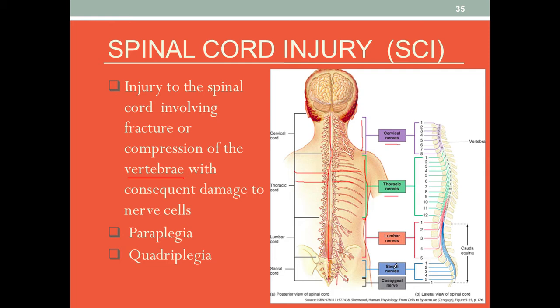Each section of the nerves controls certain muscles. Therefore, when we do have spinal cord injury, signs and symptoms and the consequences heavily depend on where exactly the injury occurred along the spinal cord.